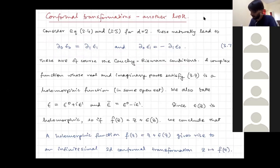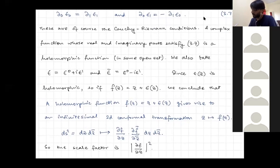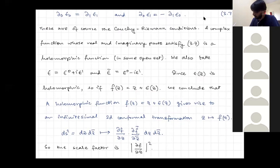We can write epsilon as epsilon-zero plus i epsilon-one, and epsilon-bar as epsilon-zero minus epsilon-one. So if epsilon(Z) is holomorphic, that means if you're looking at a function F of Z which is Z plus epsilon(Z), this is also a holomorphic function. So what is going to happen is that a holomorphic function F(Z) = Z plus epsilon(Z) is going to give rise to an infinitesimal conformal transformation of Z goes to F(Z). So the infinitesimal form of this conformal transformation will be F(Z) = Z plus some small epsilon(Z).